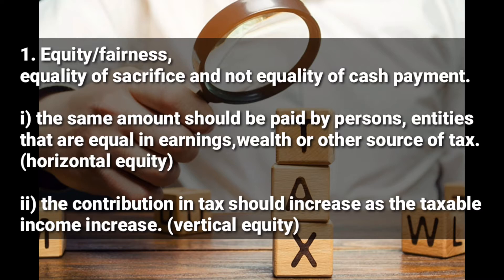The same amount should be paid by persons or entities that are equal in earnings, wealth, or other source of tax. This is known as horizontal equity — people who are earning the same money should pay the same amount of tax. If we are all earning 400,000, we are supposed to pay the same amount of tax. That is horizontal equity.